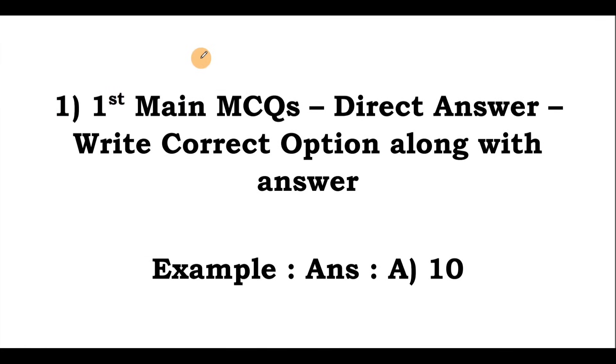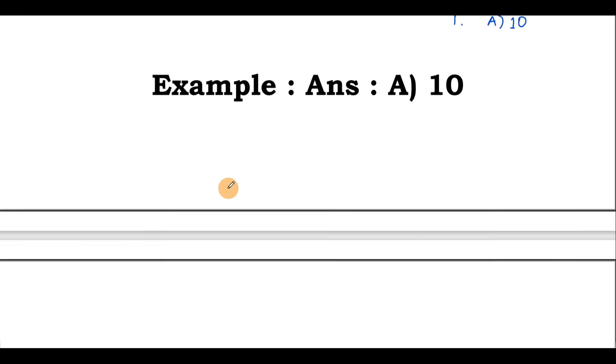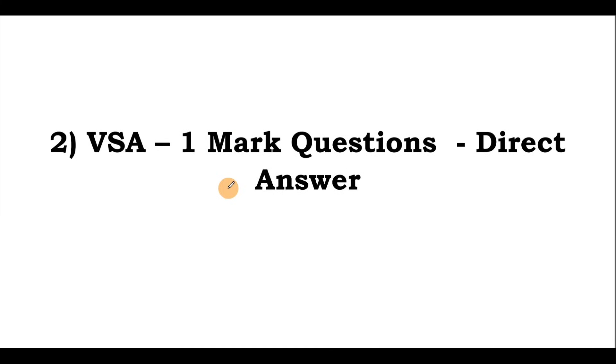First main, that is MCQ, you should write direct answer. The workspace will be provided where you can work out and you can write the direct answer along with the option. Without writing option, you will not get the marks. You should write the correct option along with the answer. For example, for the first question, if option A is correct, you should write option A along with the answer.